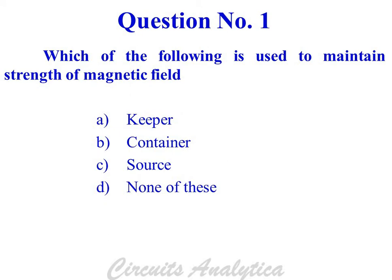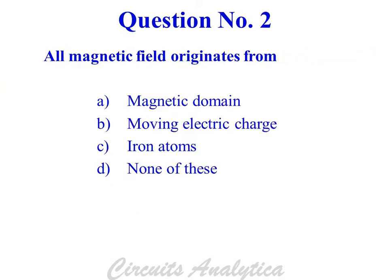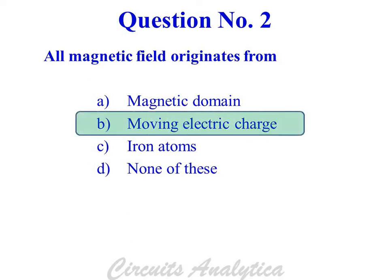Which of the following is used to maintain the strength of magnetic field? Keeper. All magnetic field originates from moving electric charge.